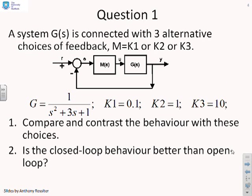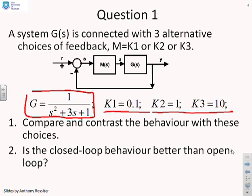First question then. So we have a system G which is connected with three alternative choices of feedback, M's K1 or K2 or K3. And you'll see the values of K1, K2, K3 here: 0.1, 1 and 10. And here's the transfer function we're asking you to use. What we want you to do is to compare and contrast the behaviour with these different choices of compensator, and then comment on how the closed-loop behaviour compares to the open-loop.